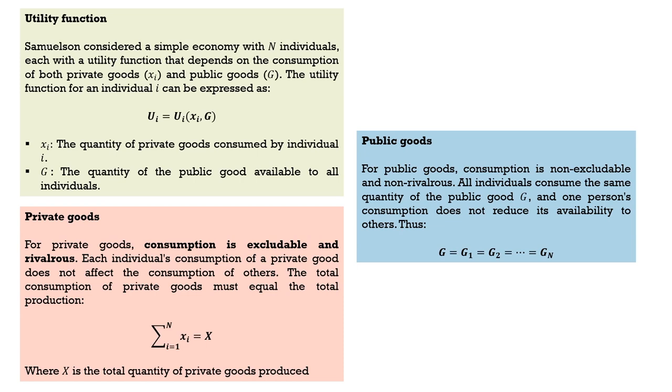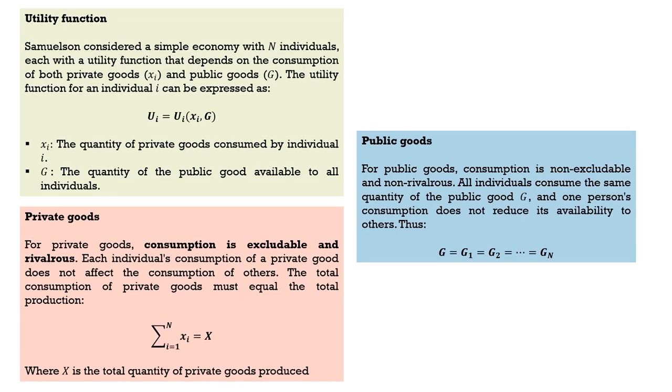Private goods are those whose consumption is excludable and rivalrous — the opposite of public goods. If I am consuming a mobile phone and have paid a price for it, my property right is delineated by that payment. If I am using it, it is not available for simultaneous use by someone else — it is excludable and rival. Each individual's consumption of a private good does not affect others, and the total consumption is a horizontal summation of individual demands, unlike the vertical summation for public goods.